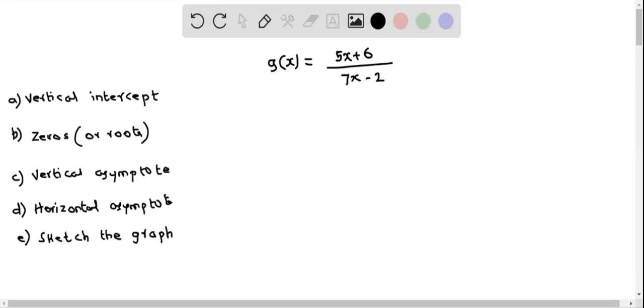We now find the vertical intercept of this function g(x) which is given as g(x) equals 5x plus 6 over 7x minus 2. So vertical intercept, otherwise called y-intercept, can be found when we put x equal to 0 into this equation.